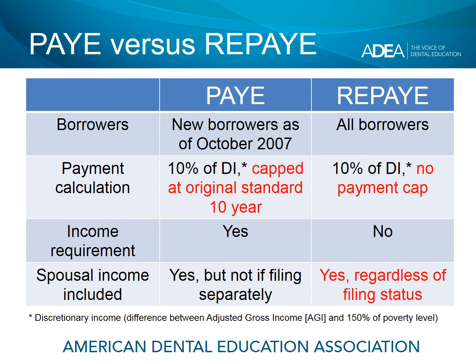Spousal income is very important for married borrowers or those thinking about getting married. Under all income plans, including PAY and REPAY, spousal income is counted for married borrowers who file a joint return. But under PAY, married borrowers who file a separate return will find that spousal income is not required and not included in the calculation of monthly payments. With REPAY, spousal income is always counted in the payment calculation regardless of a married borrower's filing status.